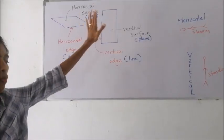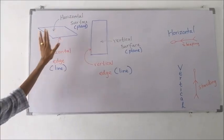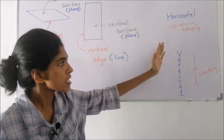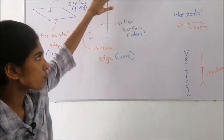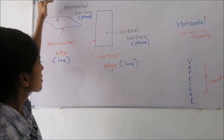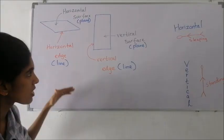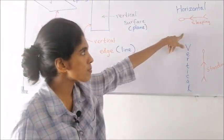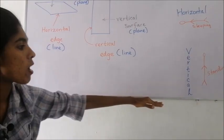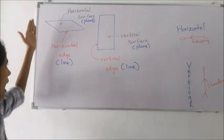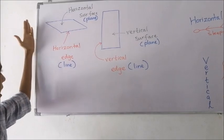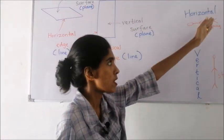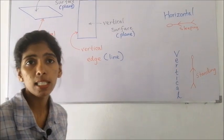Look at this whiteboard as an example. In this whiteboard, we can see a surface — this surface is vertical, it's a vertical surface. These two lines along the top and bottom are like sleeping, so they are horizontal edges. And the two lines along the sides are like standing, so those two are vertical edges.